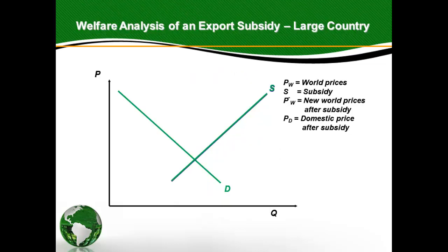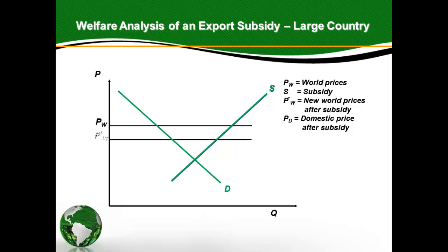Now let's look at what happens within the exporting country. PW is the world price. PW* is the new world price after the subsidy is given. PD is the domestic price after the subsidy is given. When the government gives an export subsidy, the world price falls to PW*. At home, producers who export the good get PW* plus the amount of the subsidy, but if they sell in the domestic market they only get PW*. So they won't sell domestically unless the domestic price rises to what they get by exporting. Therefore, the domestic price rises by the amount of the subsidy: PD equals PW* plus the subsidy.